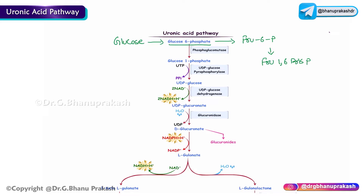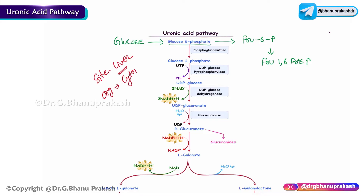Why does the uronic acid pathway occur? It is mainly for the synthesis of glucuronic acid, or glucuronides. Importantly, no ATP is formed in this pathway. The major site where this pathway takes place is the liver, and the organelle is the cytoplasm.